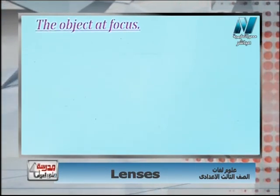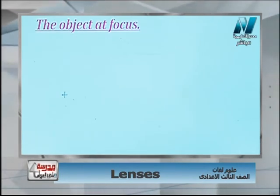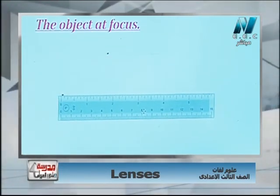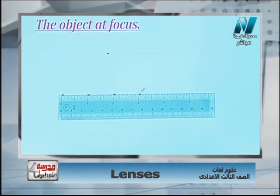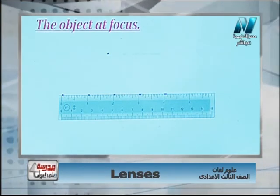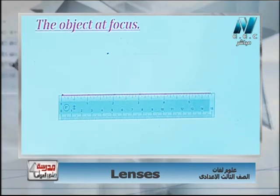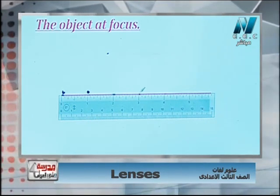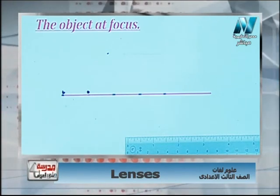Next case: the object is at focus. We again use the ruler to measure four equal distances — 0, 3, 6, 9, and 12 centimeters — to draw the principal axis with five labeled points: C, F, P, F, and C. The object is placed at the focal point.